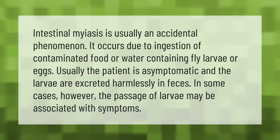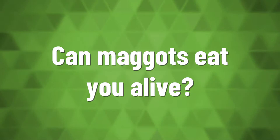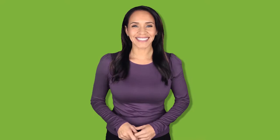Intestinal myiasis is usually an accidental phenomenon. It occurs due to ingestion of contaminated food or water containing fly larvae or eggs. Usually the patient is asymptomatic and the larvae are excreted harmlessly in feces. In some cases, however, the passage of larvae may be associated with symptoms.